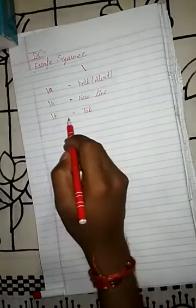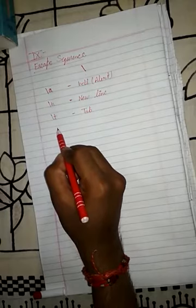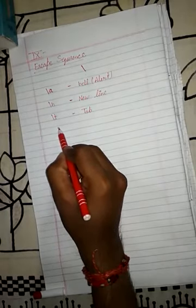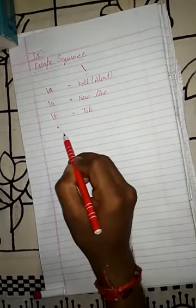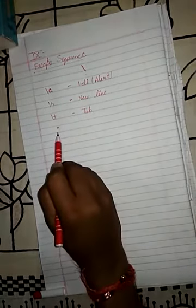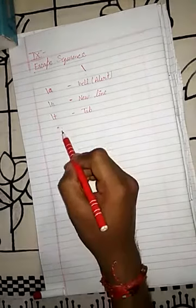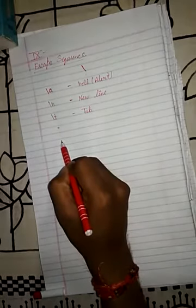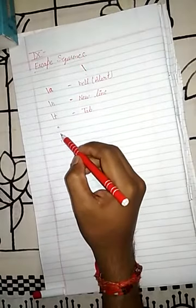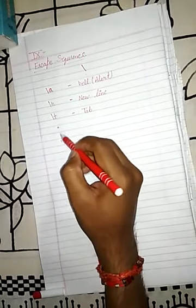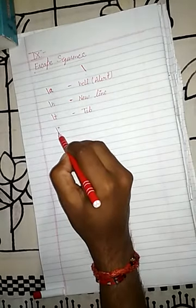Suppose if you want to print double quotes or single quotes, you cannot directly use them in your program. But if you want to, then you need the backslash sign first, then you can write single quote or double quote. If you write backslash and double quote, then double quotes will be printed in your program. If you want single quote, then you need backslash and single quote.